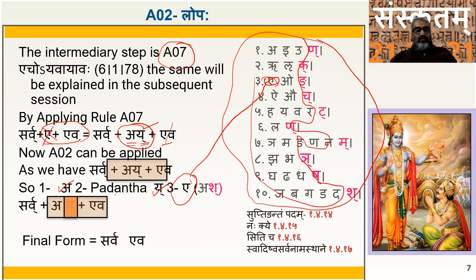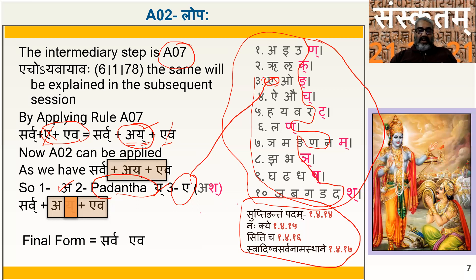You may ask what is Padantam. Padantam is defined by Panini. There are four definitions of Padam: Suptingantam padam, Nakyehe, Siti cha, Swadishu sarvanamastani. All you need to know here is that I is nothing but a Padantam. Just because I is a Padantam, this Yo becomes Lopa — therefore we have a rupam called Sarva Eva.